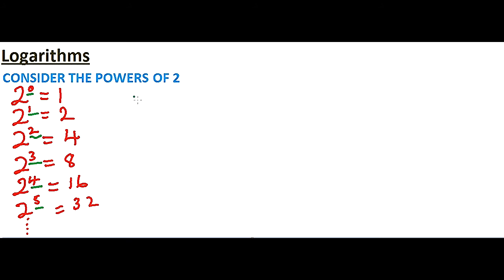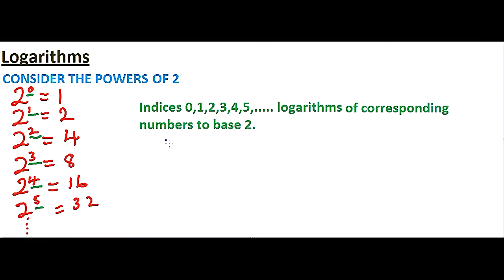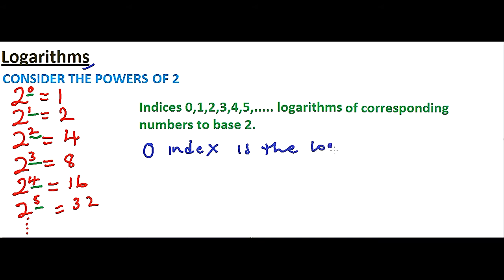Therefore, we say that the indices 0, 1, 2, 3, 4, and 5 are called logarithms of the corresponding numbers to base 2. This statement may not make a lot of sense for now if you have not dealt with logarithms earlier. But in a short while, after we do a few examples, you will be able to understand what logarithms are. Note that here we are talking of the logarithm, which we are referring to as an index. So for example, 0, the index, is the logarithm of 1 to base 2.